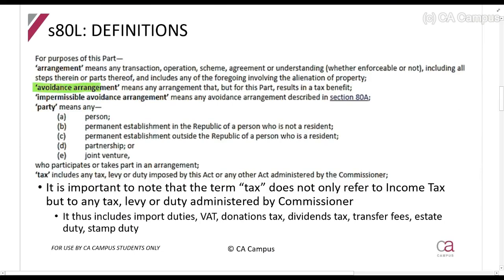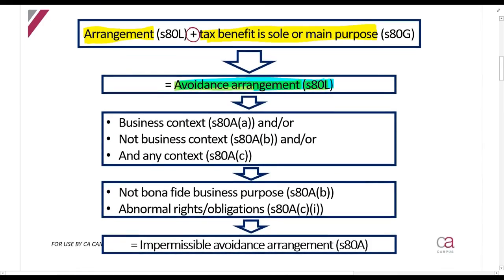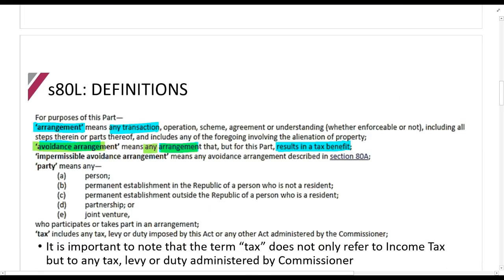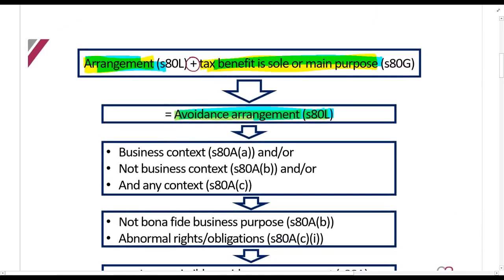Looking at Section 80L for definitions: an avoidance arrangement is any arrangement that results in a tax benefit. An arrangement is any transaction or agreement. Then you ask whether this transaction is a business transaction or not a business transaction. For example, if a father makes a donation to a trust, that's not a business transaction.